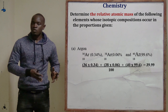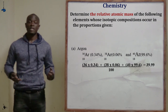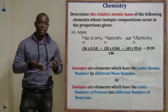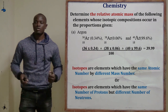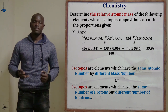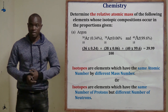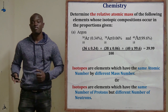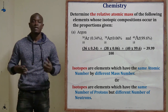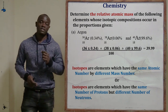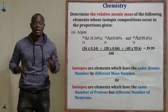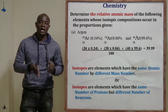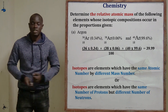In relative atomic mass, we basically use the isotopes of the different elements. In this case, we have been given isotopes of argon. Isotopes are elements which have the same atomic number but different mass numbers — or the same number of protons but a different number of neutrons. For argon, all isotopes have atomic number 18, but the mass numbers are different.